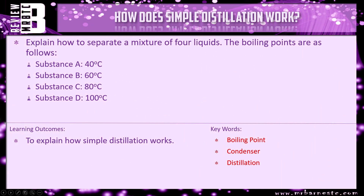Here's a review question: explain how to separate a mixture of four liquids with the following boiling points — substance A: 40°C, substance B: 60°C, substance C: 80°C, and substance D: 100°C. Think about how you could adapt the method we've just talked about to collect four different liquids. If you're not sure, I have a video on fractional distillation which goes through just that.